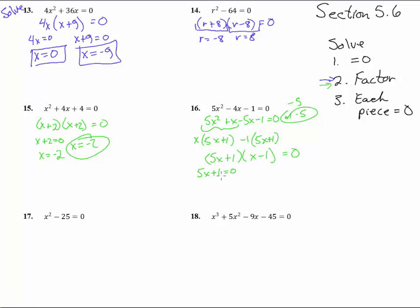5x plus 1 equals zero. That's 5x equals negative 1, x equals negative one-fifth. And the other one, x minus 1 equals zero, x equals 1. So here are our two answers to this one.